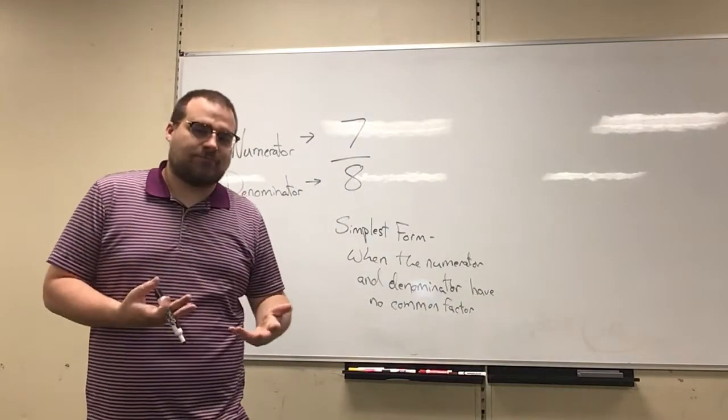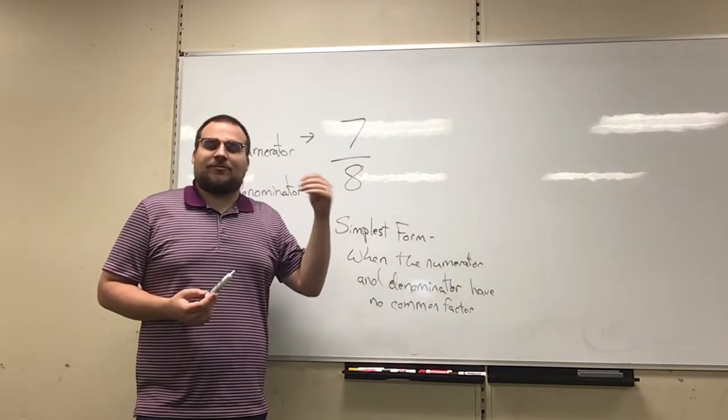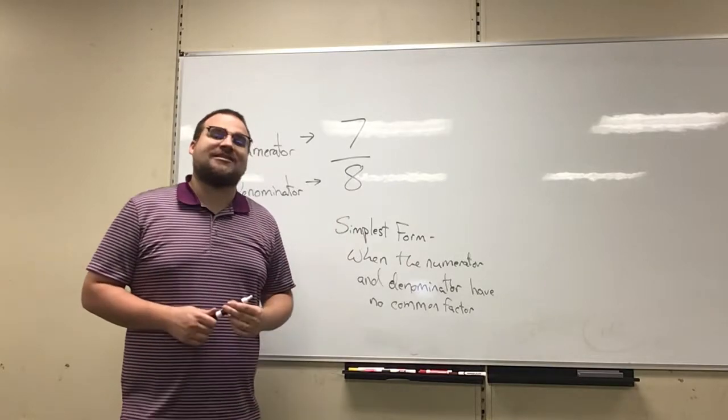However, 7 doesn't have any of those factors. It only has a factor of 7, right? Other than 1, of course. So the numerator and denominator do not have any common factors, therefore it is in simplest form.